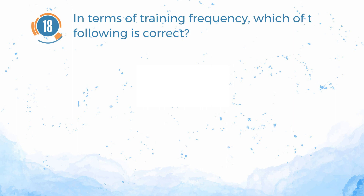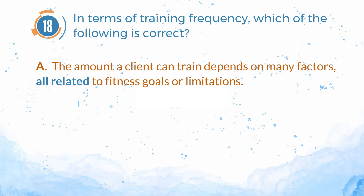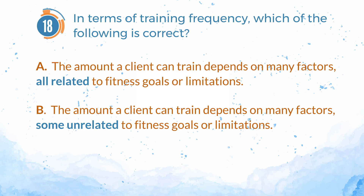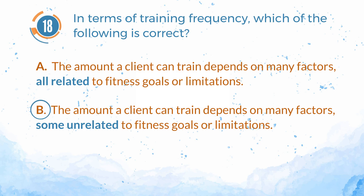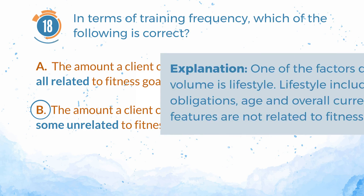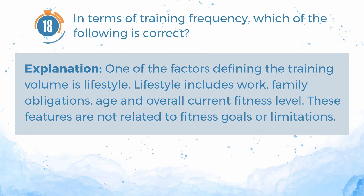Number 18. In terms of training frequency, which of the following is correct? A. The amount a client can train depends on many factors, all related to fitness goals or limitations. B. The amount a client can train depends on many factors, some unrelated to fitness goals or limitations. The answer is B. Explanation: One of the factors defining training frequency is lifestyle, which includes work, family obligations, age, and overall current fitness level — features not related to fitness goals or limitations.